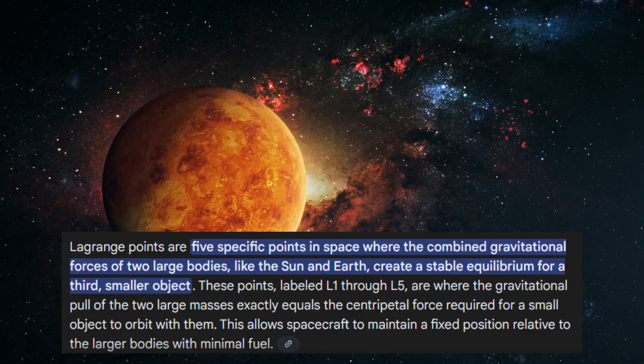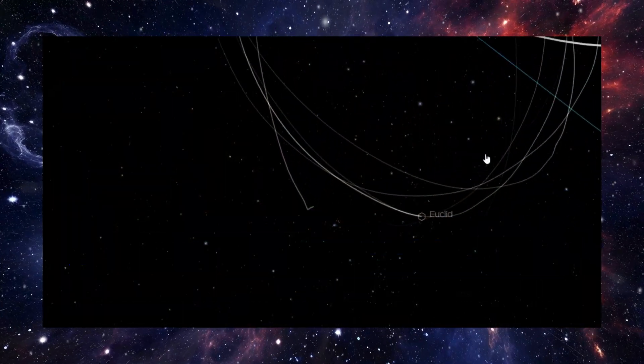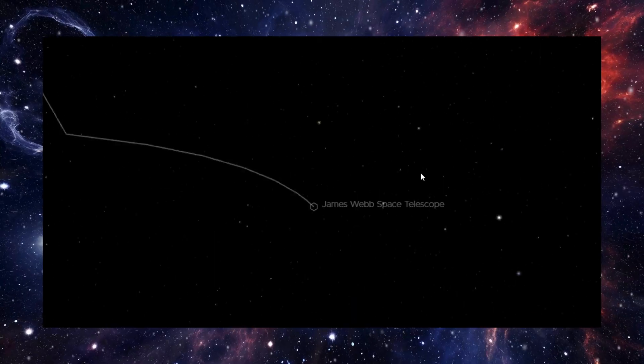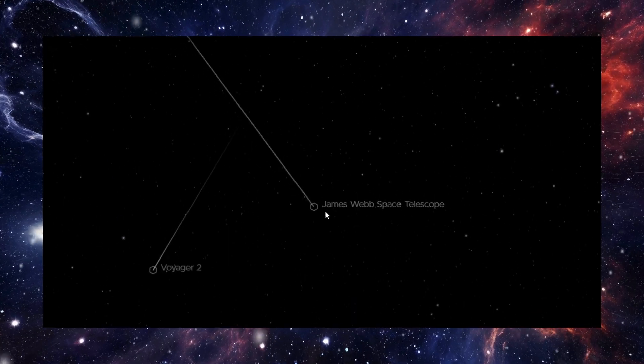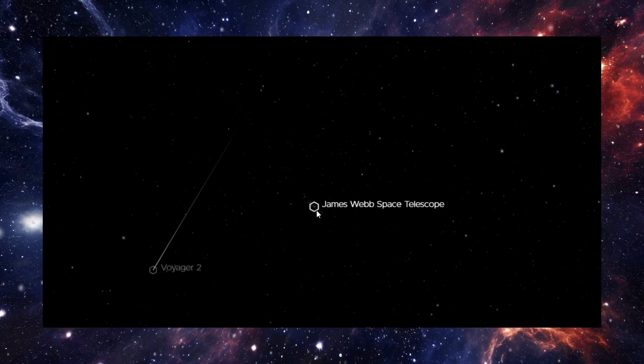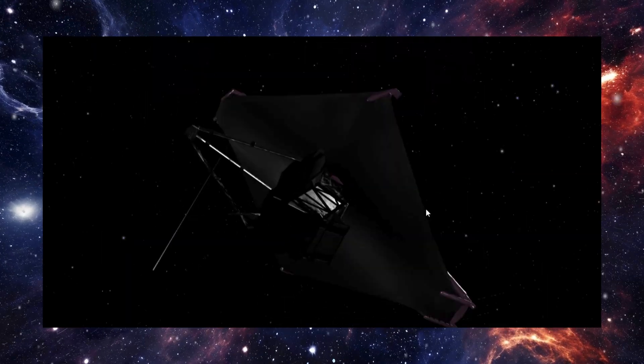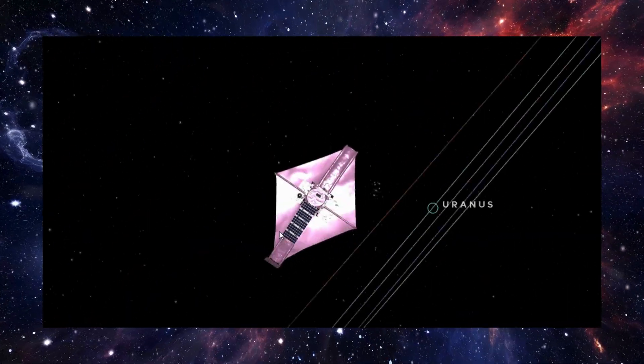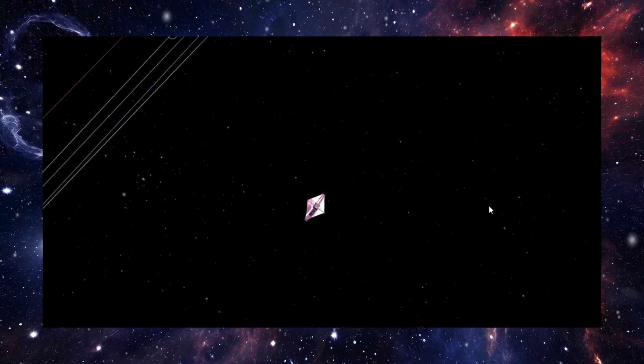We use these points all the time. The James Webb Space Telescope sits in one. The SOHO spacecraft sits in one. Multiple satellites use them to maintain stable observation platforms with minimal fuel. These spots are essentially cosmic parking spaces.